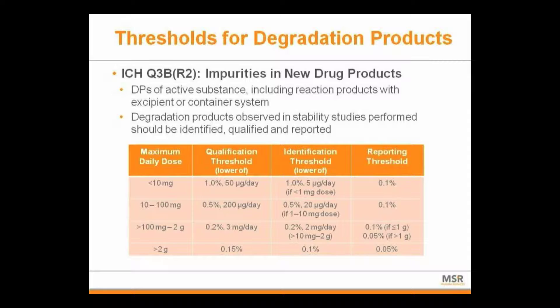New drug products also have their own thresholds. Again, there's a threshold for qualification, identification — knowing the structure of the impurity — and then just reporting the impurity threshold. They're different depending on not just whether it's the product or the drug substance, but also what stage you're at in development.